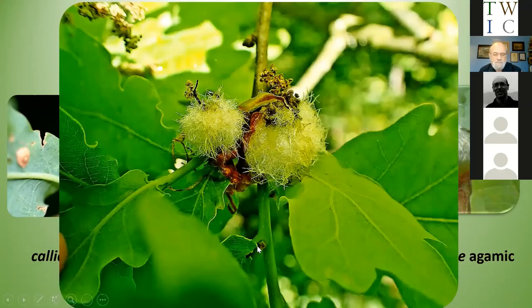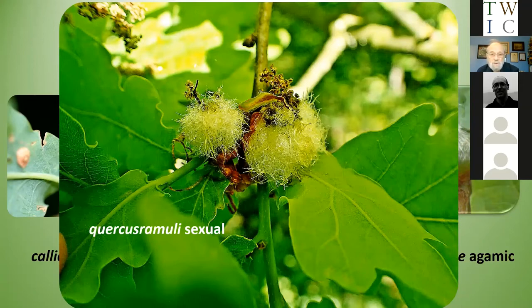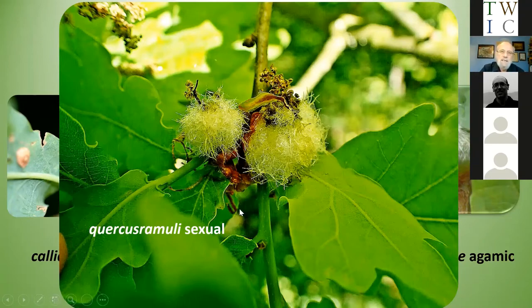Here's one of the cotton wool galls — Andricus quercusramuli. If you're familiar with the Robin's Pincushion or Bedeguar Gall on roses, you'll see this is very similar. Whatever the gall causer is doing with the DNA in oak trees, it's producing a very similar effect to Diplolepis rosae, which causes the Bedeguar Gall on roses — the only difference being these haven't got the red tinge.